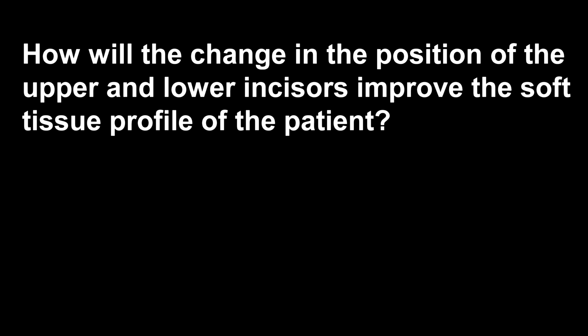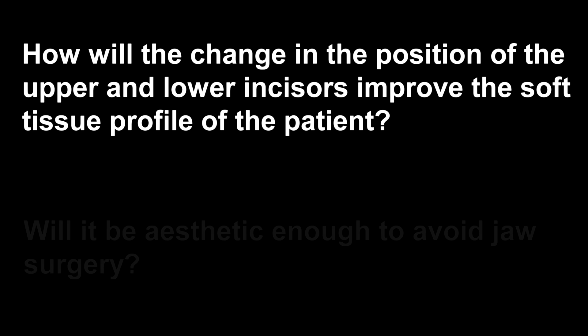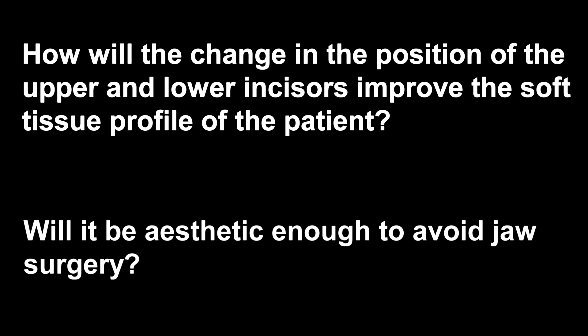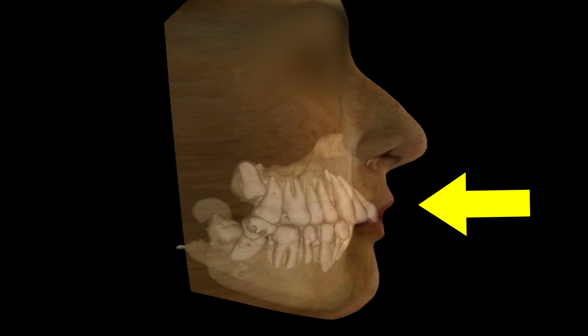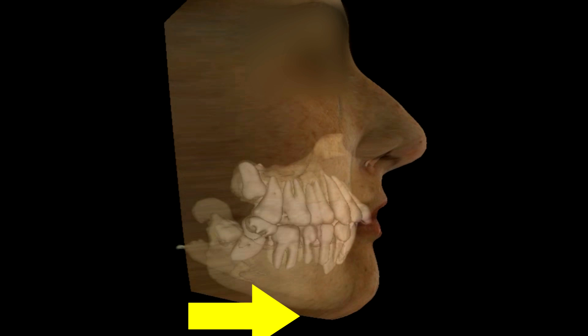How will the change in the position of the upper and lower incisors improve the soft tissue profile of the patient? Will it be sufficient to avoid jaw surgery? In order to experience the change, we have to put the teeth into the volumetric x-ray and simulate the movement of the upper teeth backward and the lower teeth forward.